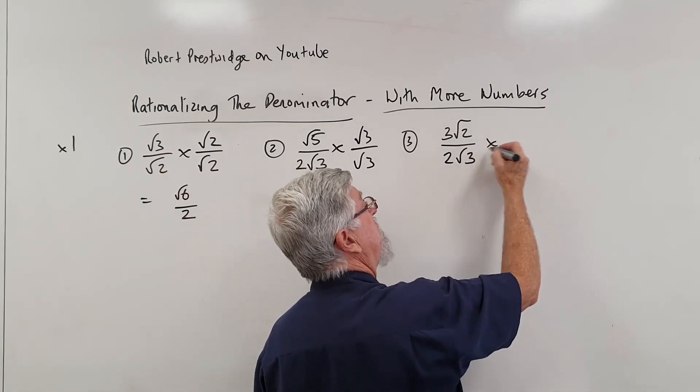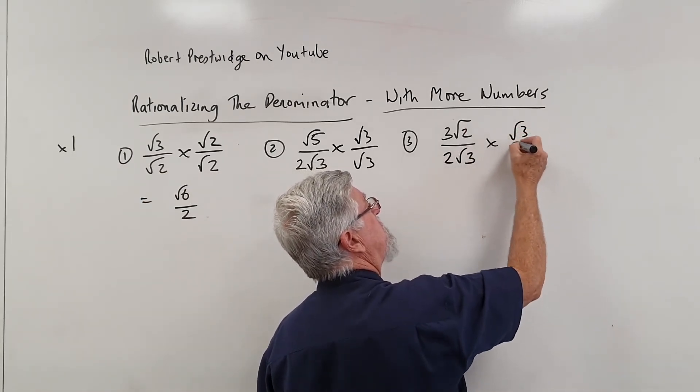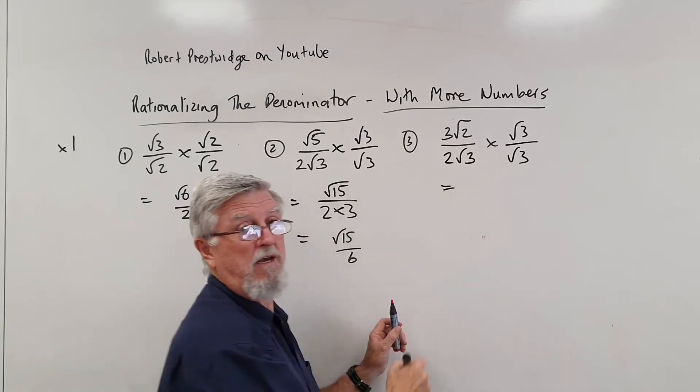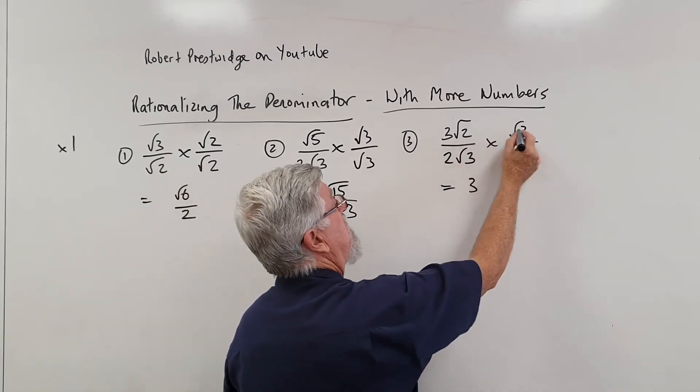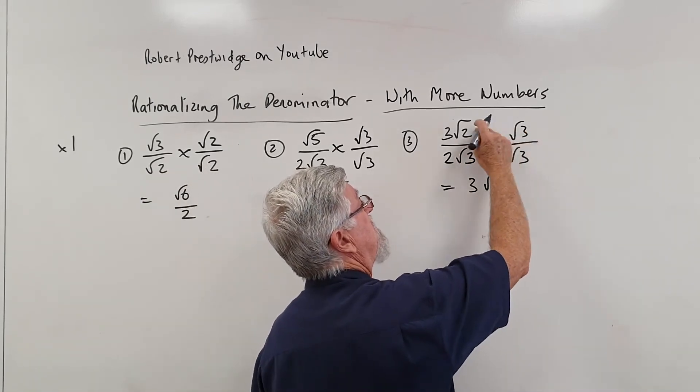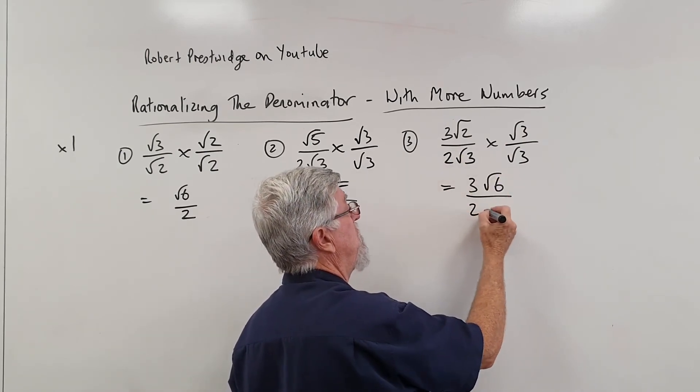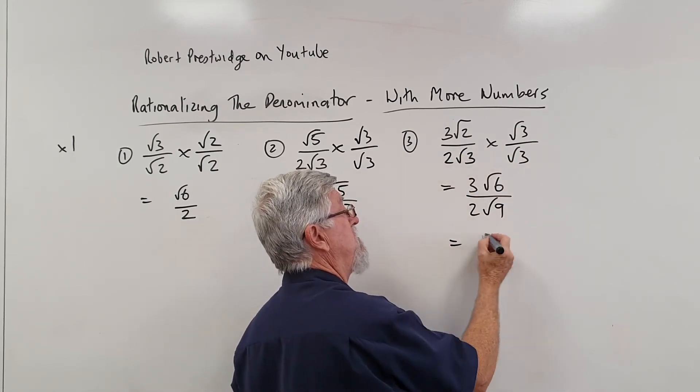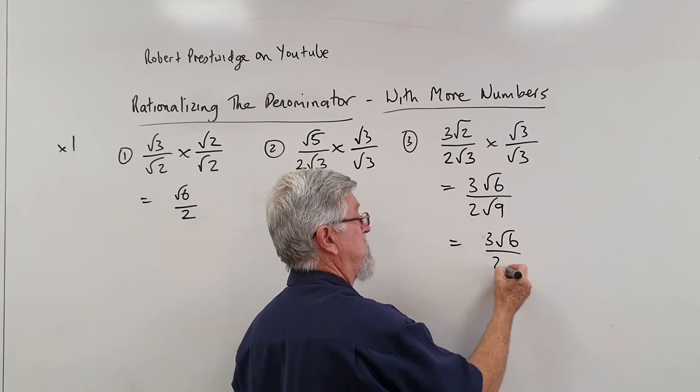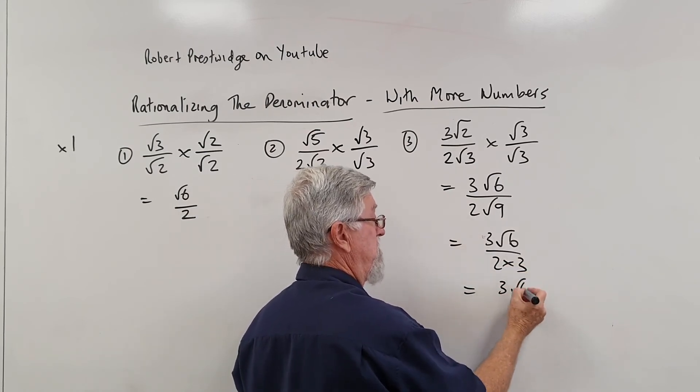So this one here, people get mucked up with the root 2 on top. It's just the root 3 and the root 3. The top becomes 2 times root 6 because the insides multiply. The bottom, if I was going to fuss for a moment, I could go 2 and that's root 9. But most people are okay that that's just 2 times 3, which is 3 root 6 on 6.